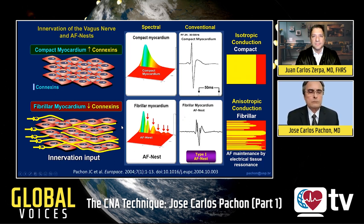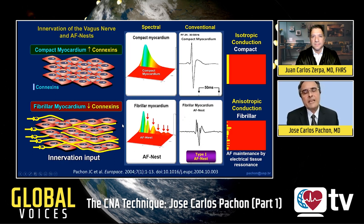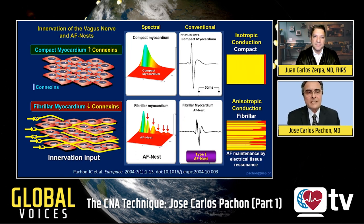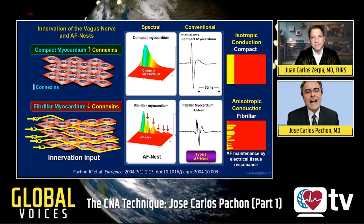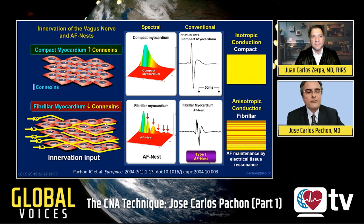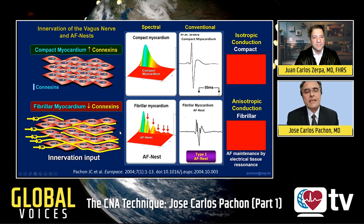In a short time, we observed that ablation of the atrial fibrillation nest produces good results — complete electrical stability of the atrial wall. Another very important result is vagal denervation of the atrial wall. We realized that the atrial fibrillation nest is related to the insertion of innervation, mainly vagal innervation, into the atrial wall.